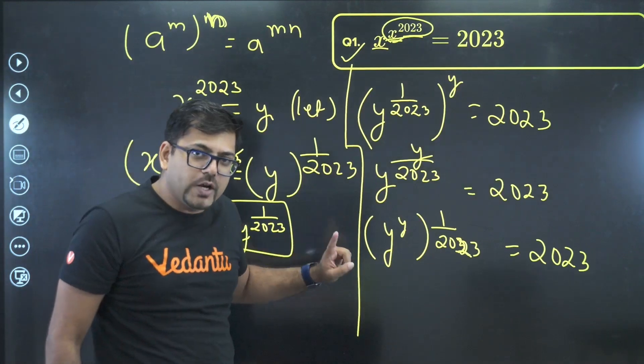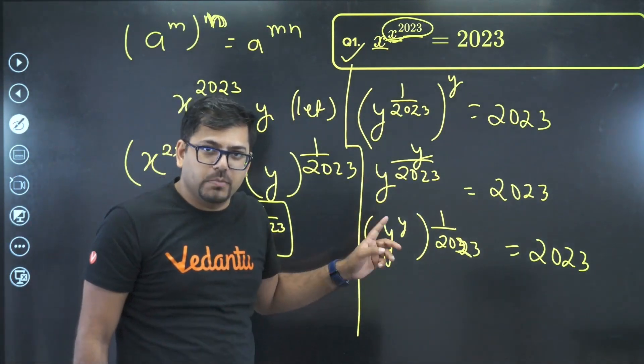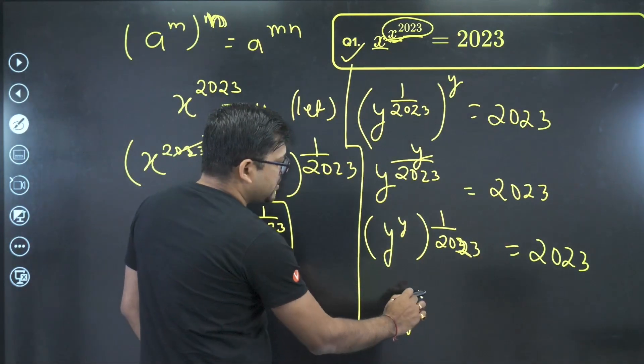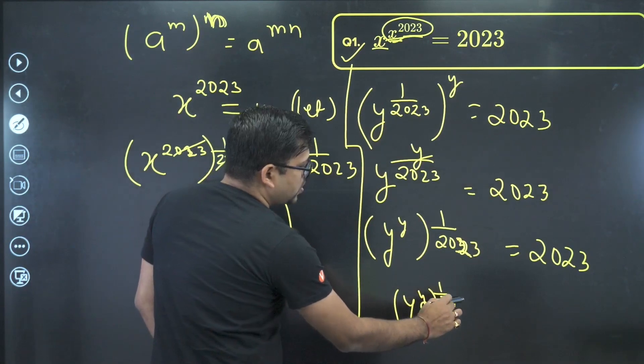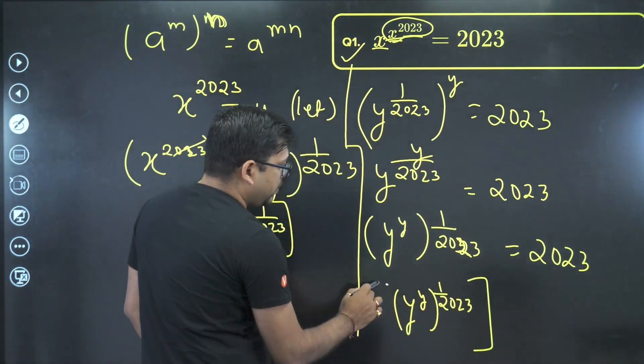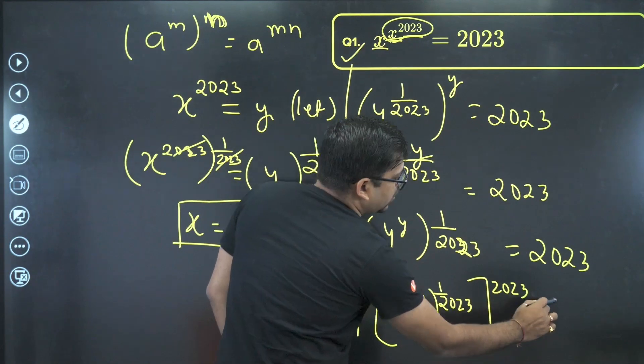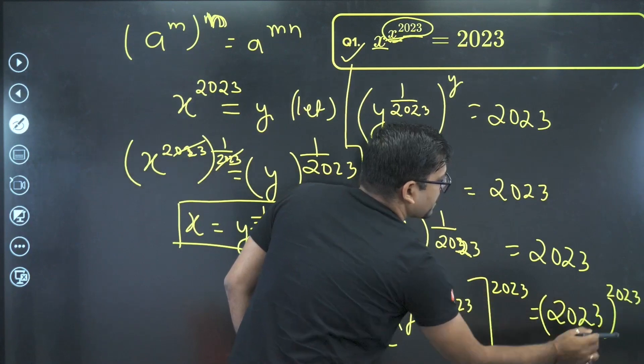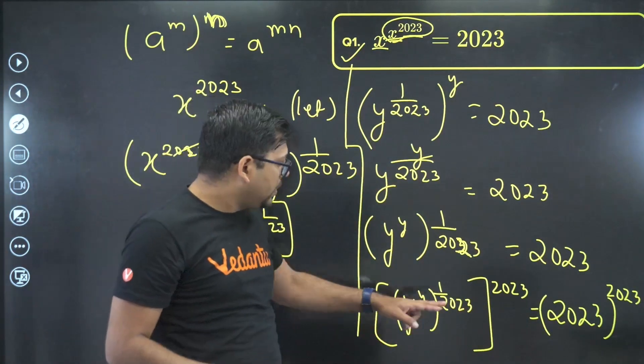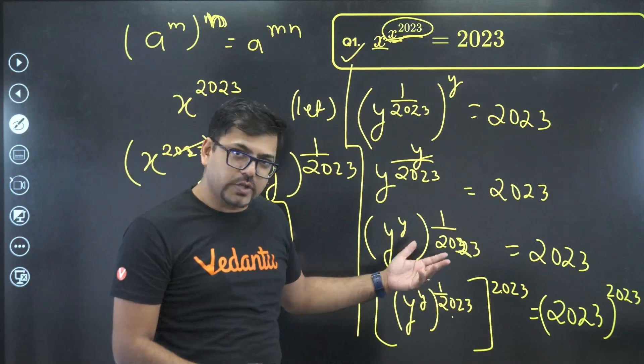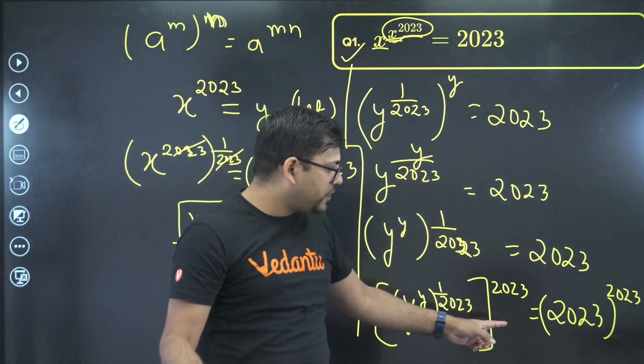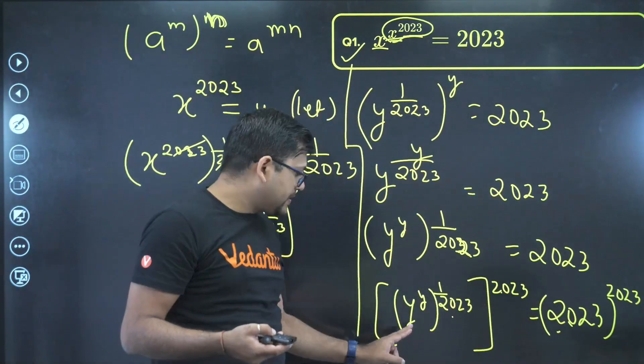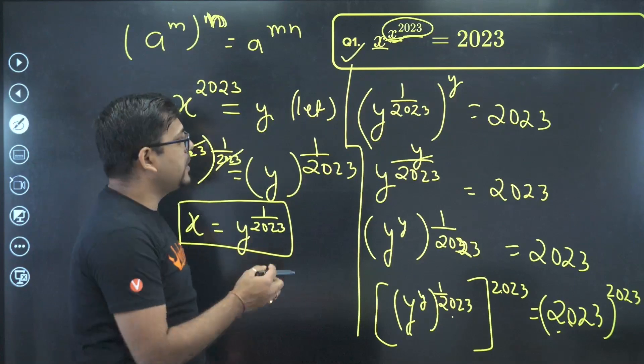Now if I take power 2023 both side, both side I can do that. So if I do that, what will happen? If I take power both side, this is y raised to power y, whole raised to power 1 by 2023, whole powered 2023. And here also 2023, whole powered 2023. So if I do this, what will happen? This 2023 and this 2023 gone, cancelled. And in the RHS we are having 2023 to the power 2023, which is same number to the same power. And hence we will get the answer.